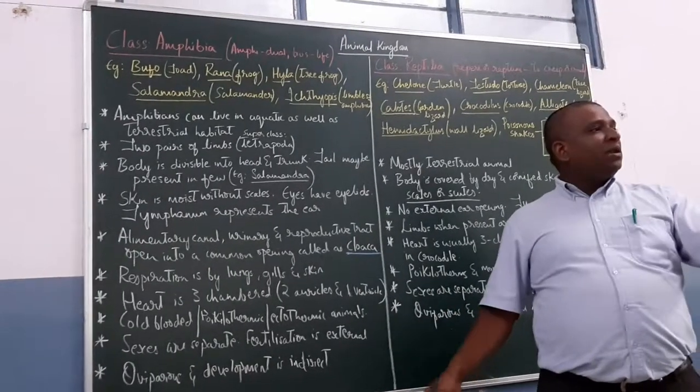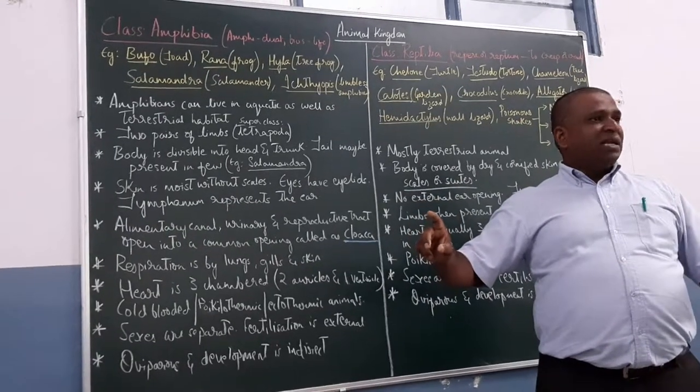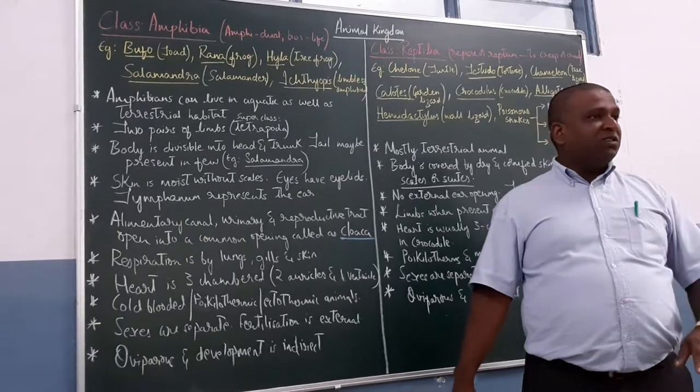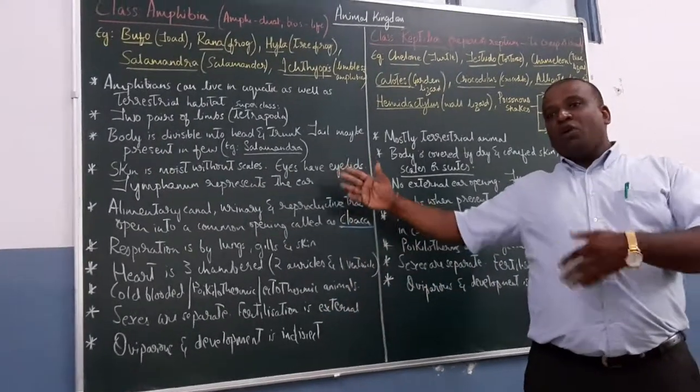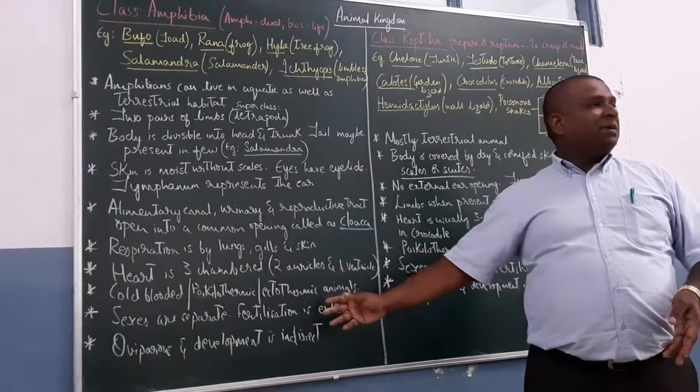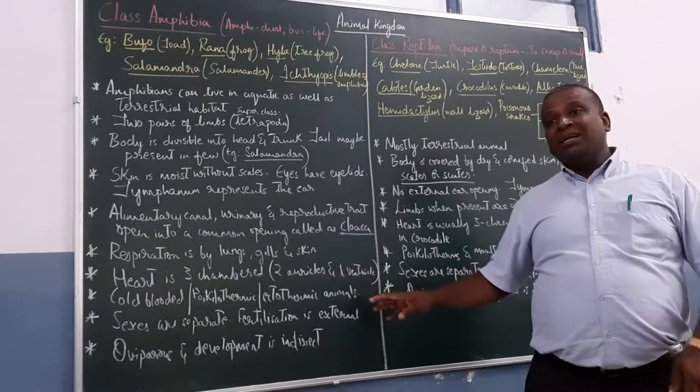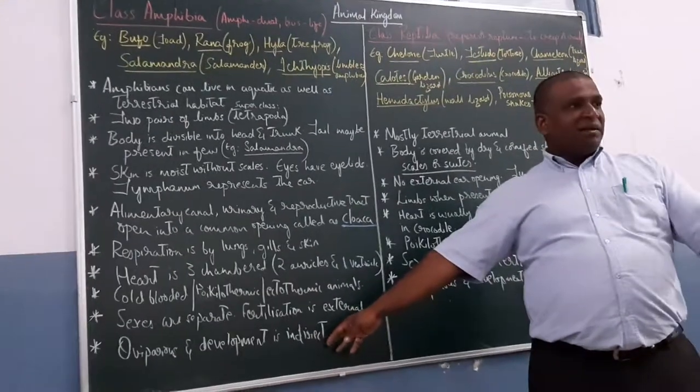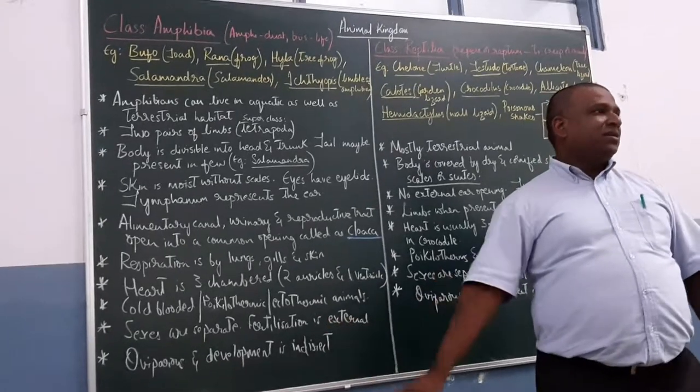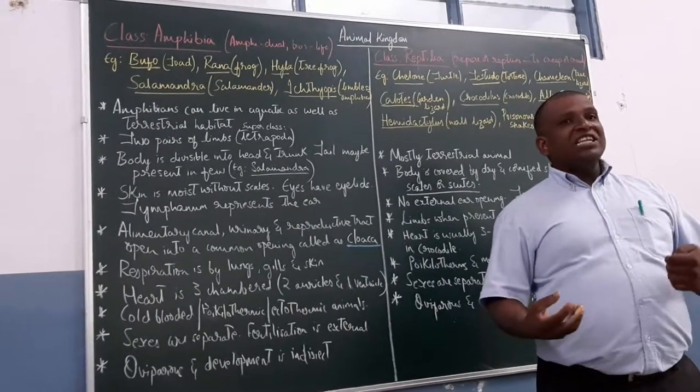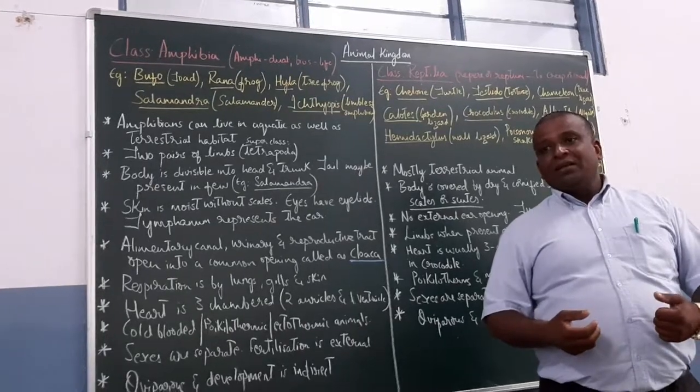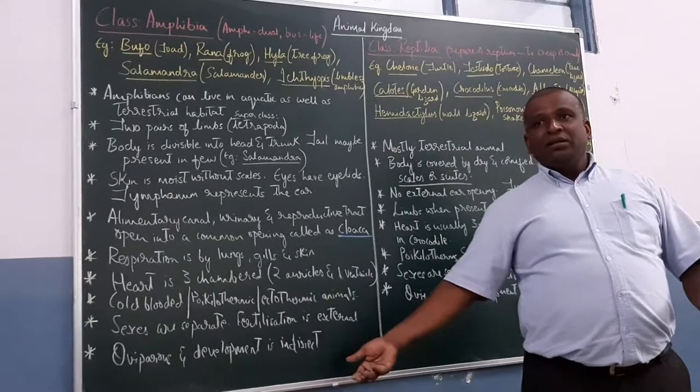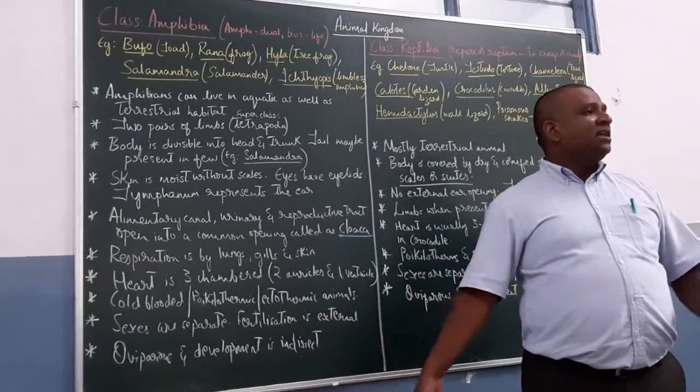Because the tadpole and adult frog, they are completely different in morphological structure. The young ones undergo metamorphosis just like caterpillar into butterfly. You find here tadpoles into frogs or toad. So, you have to understand that development is indirect. They are egg-laying. Fertilization does not take place within the female genital tract. It is happening outside in the water medium. So, we call that as external fertilization.